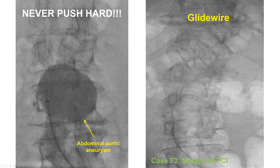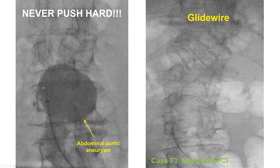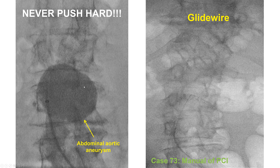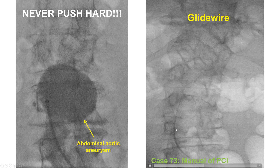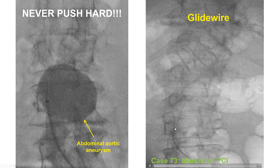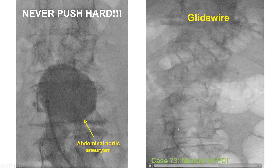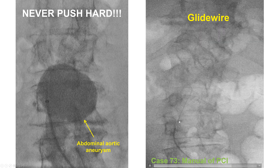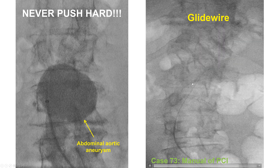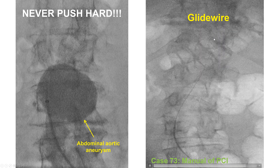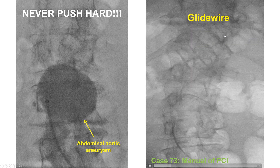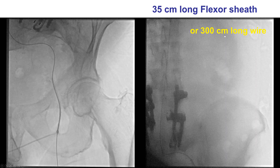This is an example of resistance due to an abdominal aortic aneurysm. This was solved by advancing a catheter next to the aneurysm, and then using the GlideWire, which eventually found its way through the aneurysm to the proximal part of the aorta.